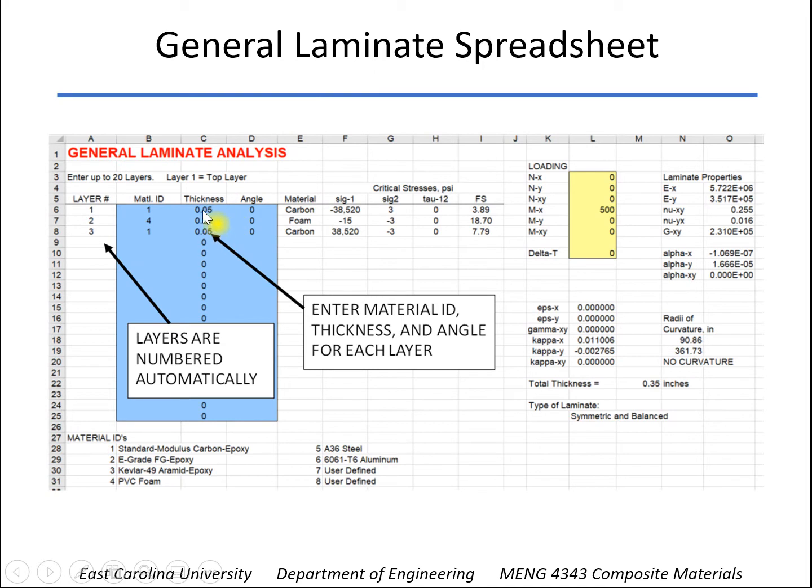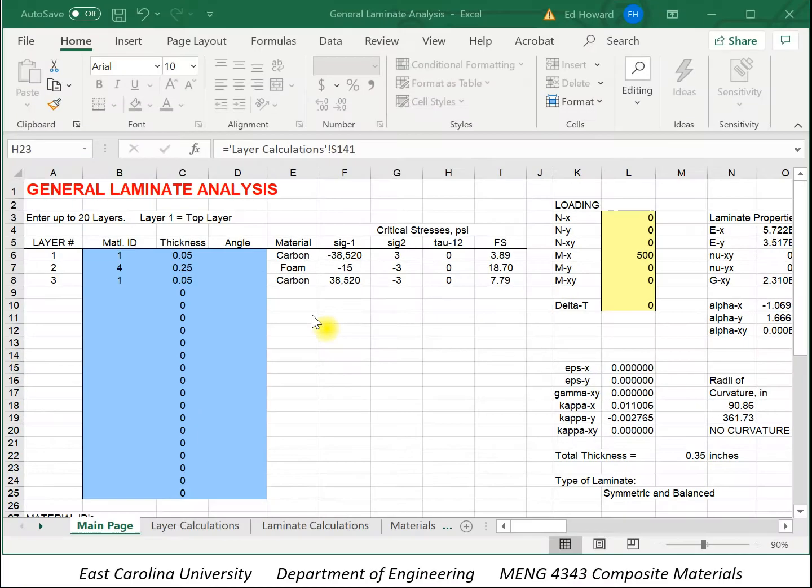As you put in a non-zero thickness here, the layers get numbered automatically. Let me switch over to that real quick, and see the values that we put in here are the example that we worked when we were looking at bending of a symmetric laminate with carbon epoxy skins and a foam core.